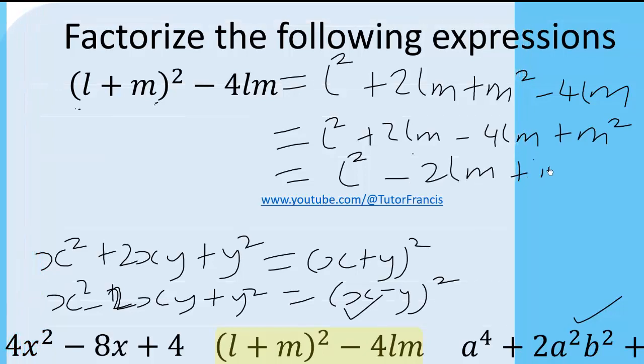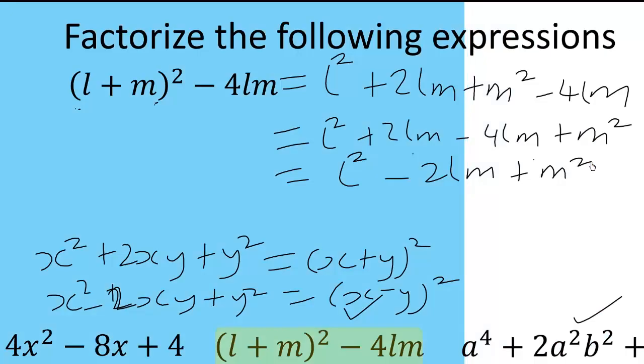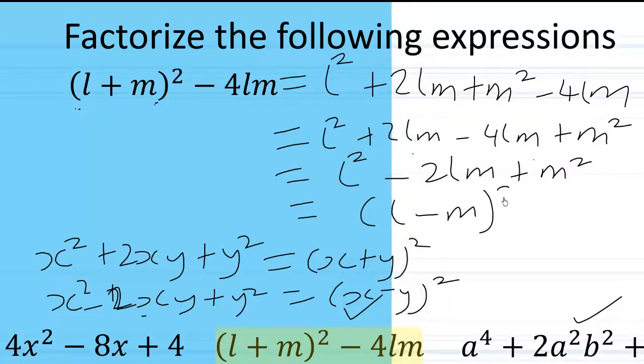So using these identities, this will factorize to (l - m)².